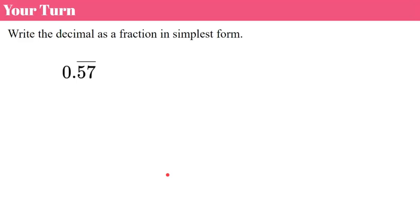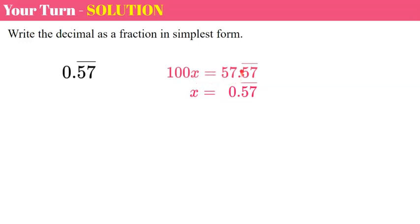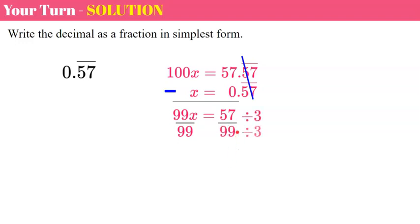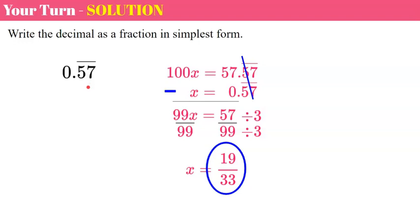Now it's your turn — write 0.57 repeating as a fraction in simplest form. Welcome back. Let x equal the repeating decimal. Two digits repeat, so multiply both sides by 100. Subtract: the repeating digits cancel, leaving 99x equals 57. Divide each side by 99. Now simplify: both 57 and 99 are divisible by 3. 57 divided by 3 is 19, and 99 divided by 3 is 33 — giving 19 over 33 in simplest form. So 0.57 repeating is equivalent to 19 over 33.